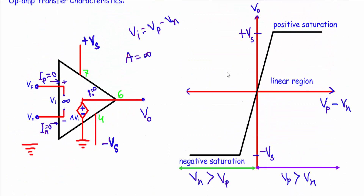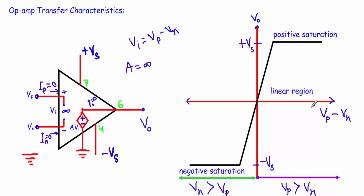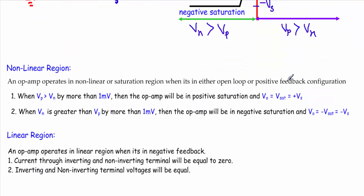An operational amplifier operates in the linear region when it is in negative feedback connection. In this region, the two golden rules of the operational amplifier apply: first, the current through the inverting and non-inverting terminals equals zero, so IP and In are both zero; and second, the inverting and non-inverting terminal voltages are equal, so VP equals Vn.